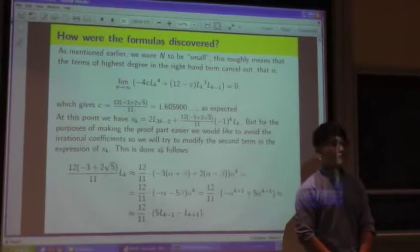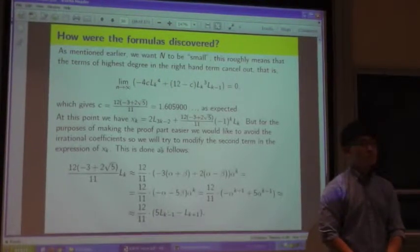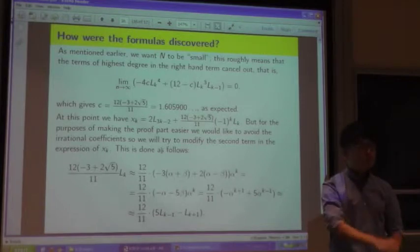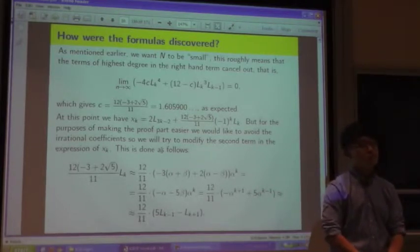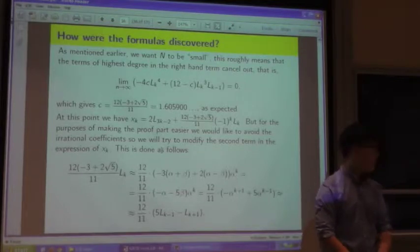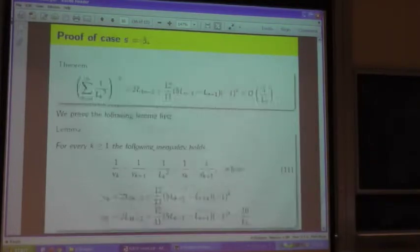When you were playing around with these terms and looking at what these tail things look like, what made you think, hey, maybe I'll normalize by dividing by, say, the LN or whatever? How did you go with things like that?